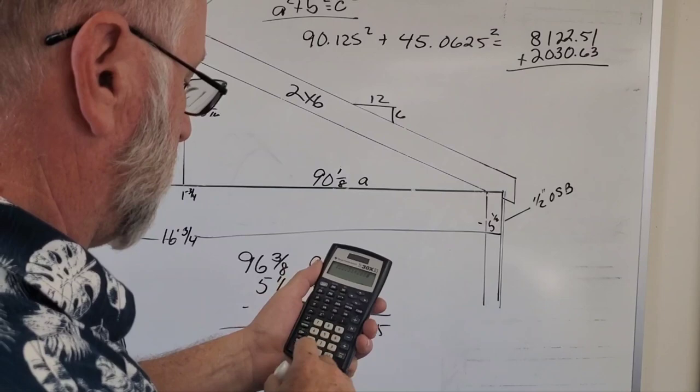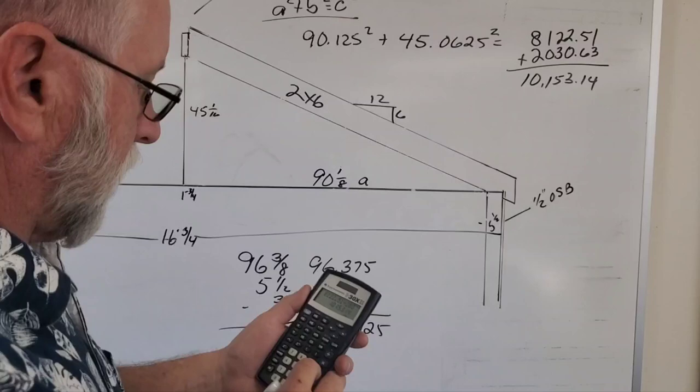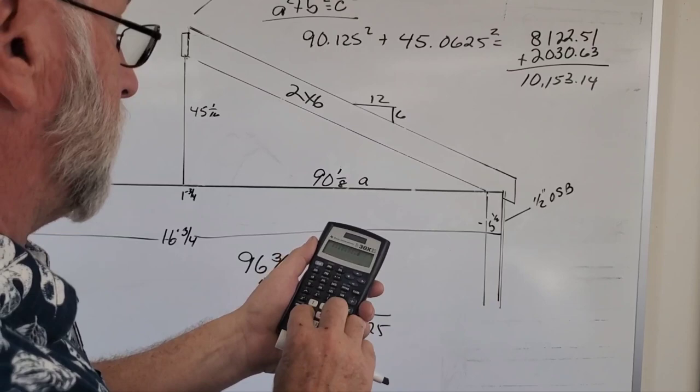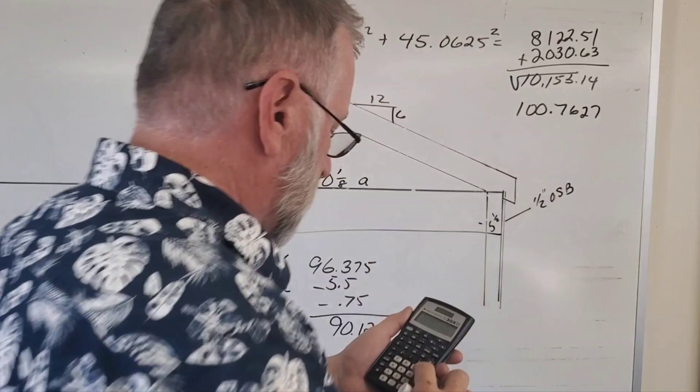2,030.63 plus the previous equals 10,153.14. And now we have to have the square root of that. So there's a square root button, you must push the second button first. The square root of that is 100.7627.